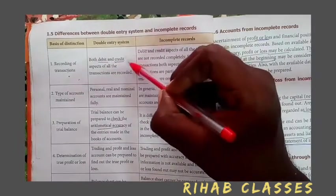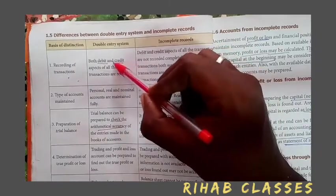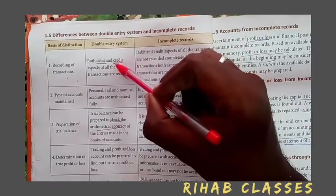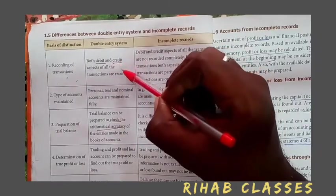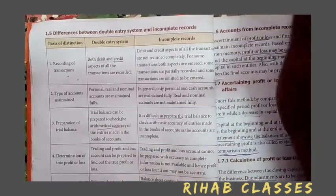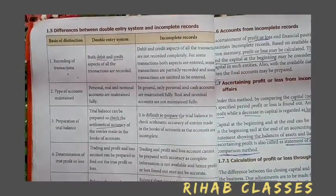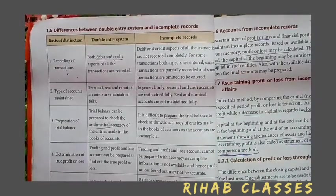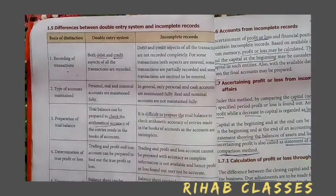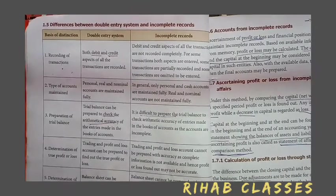The first basis of distinction is the recording of transactions. In the double entry system, both the debit and credit aspects of all transactions are recorded.